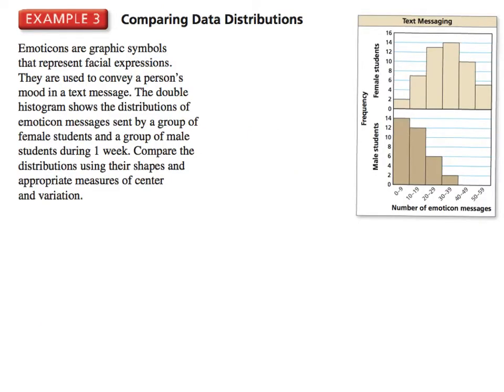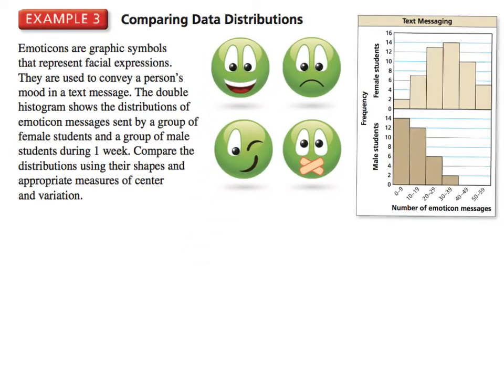In example number three, emoticons are graphic symbols that represent facial expressions used to convey a person's mood in a text message. The double histogram shows the distributions of emoticons in messages sent by a group of female students and a group of male students during week one. We want to compare the distributions using their shapes and appropriate measures of center and variation.